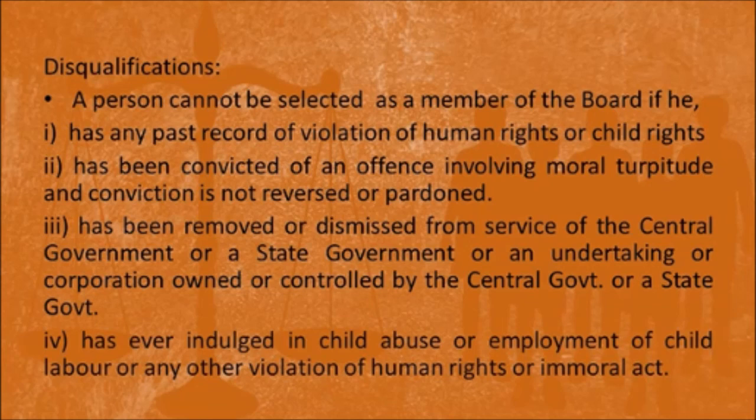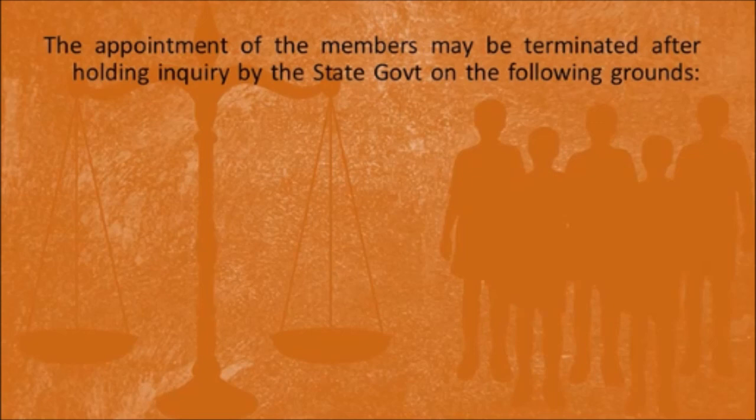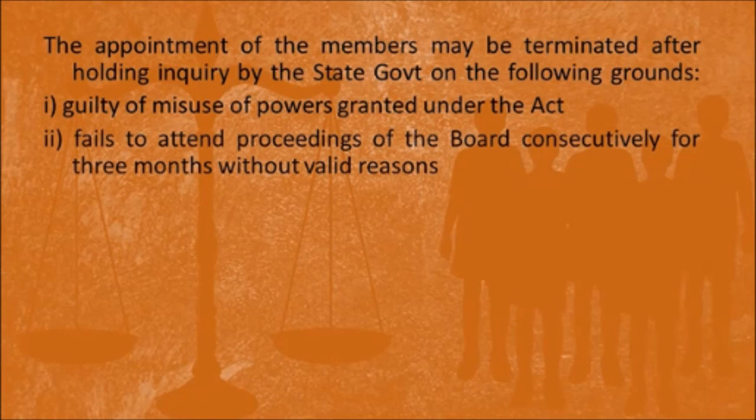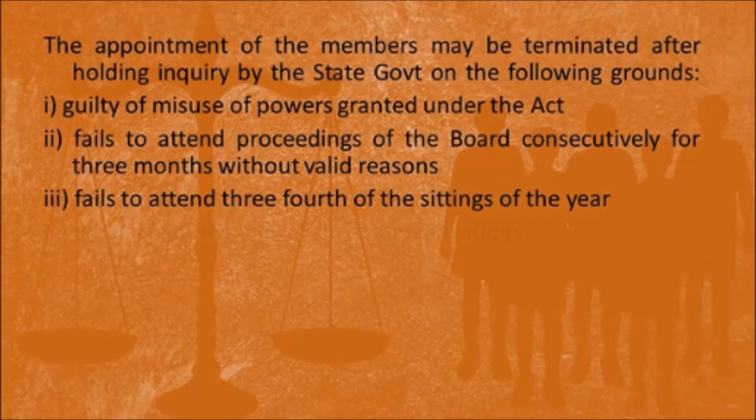A person already appointed as a member of the Juvenile Justice Board may be terminated after holding an inquiry by the state government on certain grounds. The first ground is if the person is guilty of misuse of powers granted by the act. Secondly, if that person fails to attend proceedings of the board consecutively for three months without valid reasons. Thirdly, if a member fails to attend three-fourths of the sittings of the board for the year. Fourthly, if the member is ineligible due to any of the disqualifications.